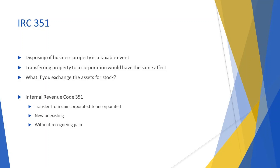Section 368(c) defines control. To be in control of a corporation, you or your group of transferors must own, immediately after the exchange, at least 80% of the total combined voting power of all classes of stock entitled to vote, and at least 80% of the outstanding shares of each class of non-voting stock.